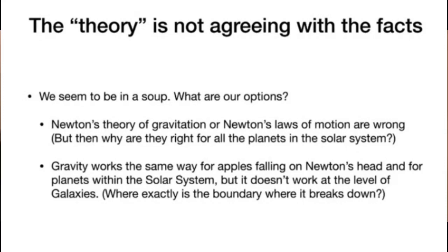What are the options when confronted with a puzzle like this? You could say Newton's theory of gravitation is maybe wrong, or maybe Newton's laws of motion are wrong. But they're probably not wrong because they work in 99 other problems — why did they work for the nine planets in the solar system? If it is wrong, it should be wrong everywhere; if it's right, it should be right everywhere. Another option is that gravity works the same way for apples falling, the moon going around the Earth, and the Earth around the Sun, but maybe at big enough scales it breaks down — that Newton's law of gravitation is not inverse square but inverse cubed or something. But then where exactly is the boundary where it breaks down? Neither of these options seems very convincing.